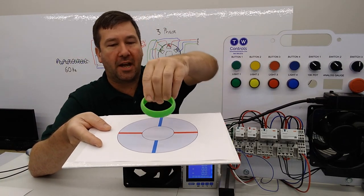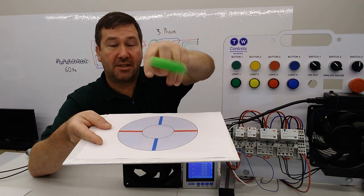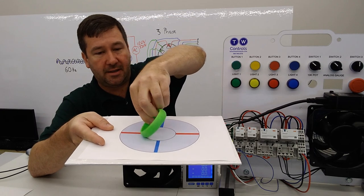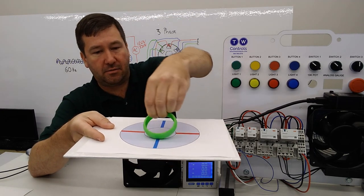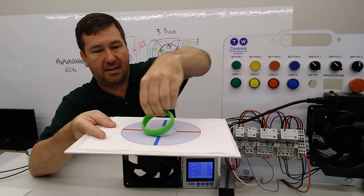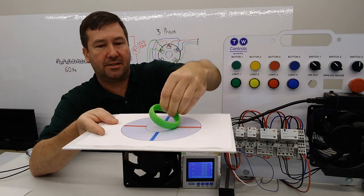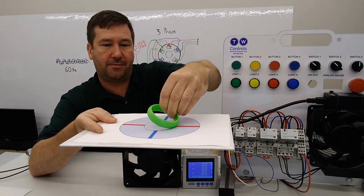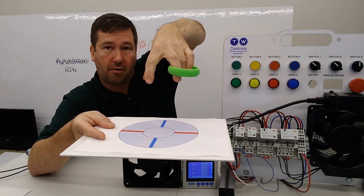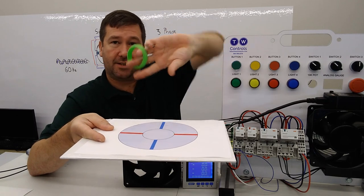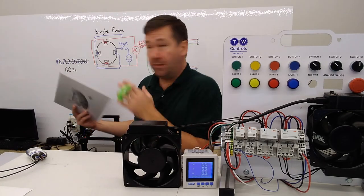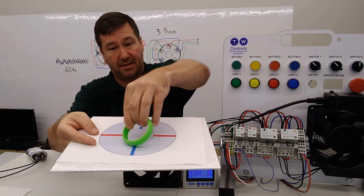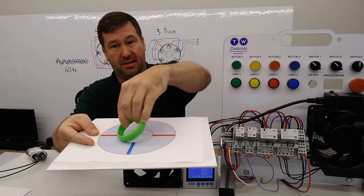And if you imagine that towards the paper is south and away from the paper is north, then this field is doing this something like this right here all the time. So it's constantly rotating that. And those positive and negatives are going to grab a hold of that rotor and turn it. So there is no physical connection between the windings and the squirrel cage, which the shaft is connected to. It is simply this magnetic field sitting here rotating.